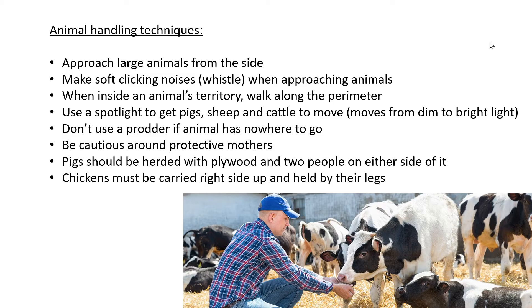If it's indoors in a barn and you want animals to move from point A to point B, make sure the area is dimly lit and shine a bright light at the end of the barn where you want them to go — they will follow it because they think it's a way out. Also, don't use a prodder if the animal has nowhere to go because if it can't escape, it can hurt you or hurt itself.